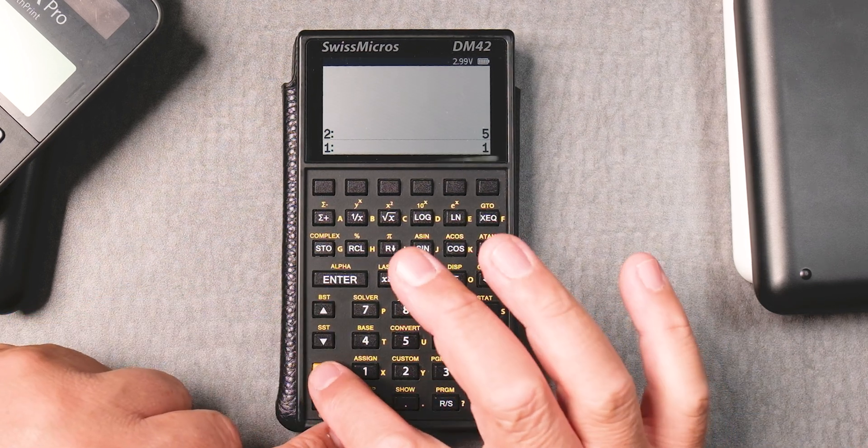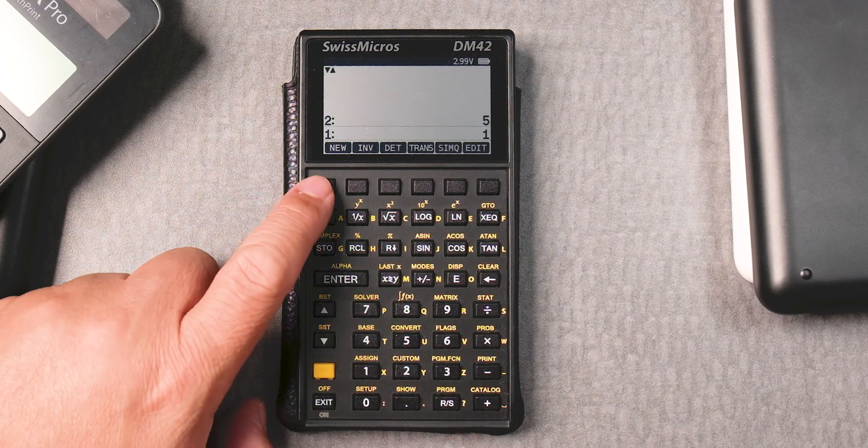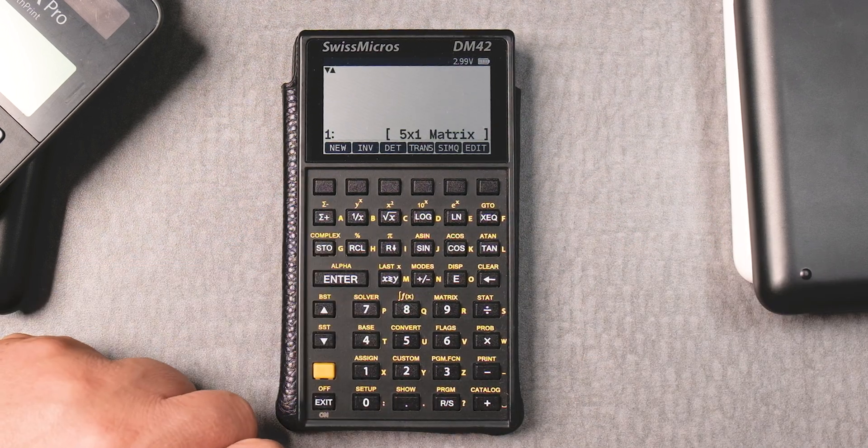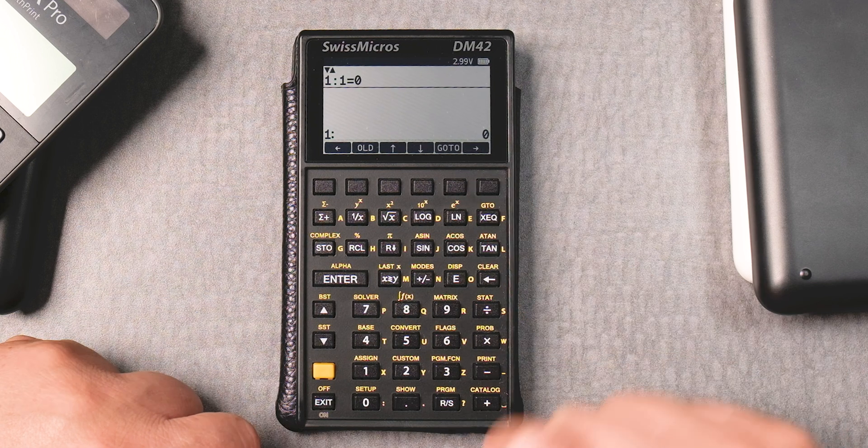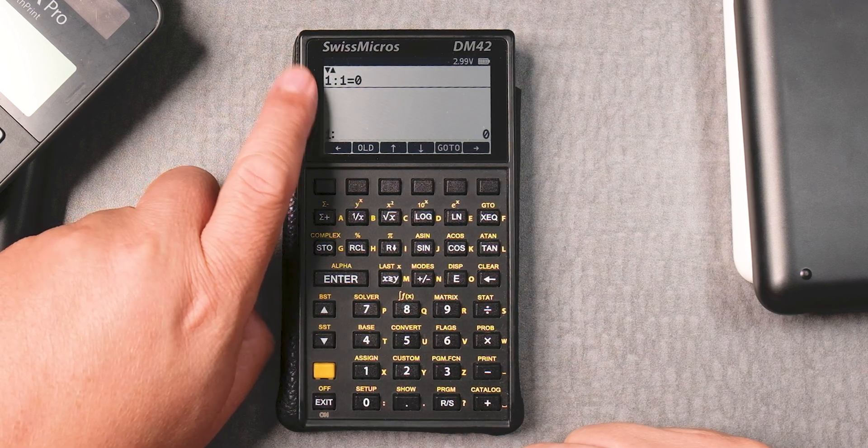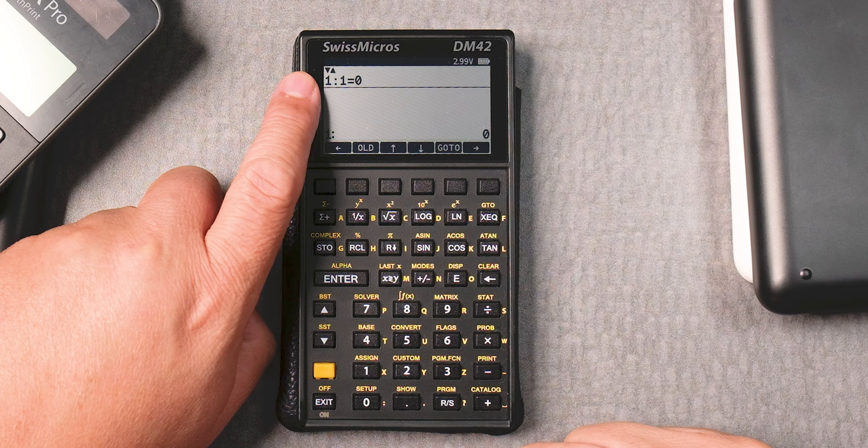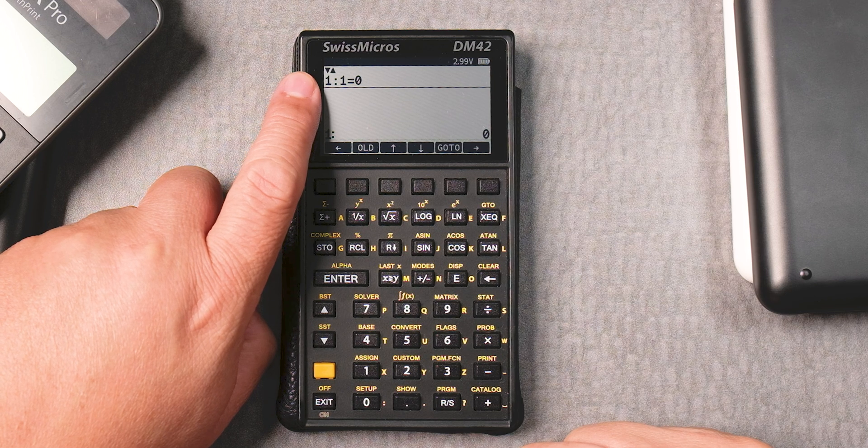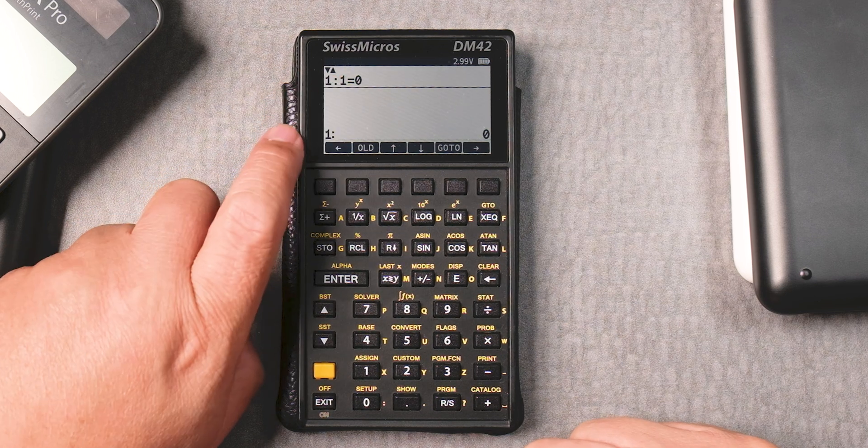Then I'm going to press shift matrix and I want to click on new, a new matrix, and then I want to edit that matrix. Here it says it's going to be row one, column one.